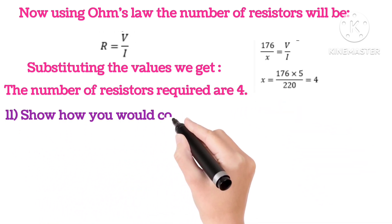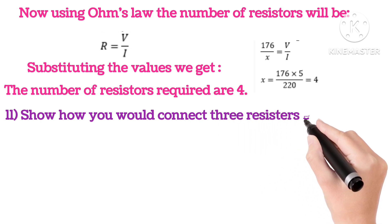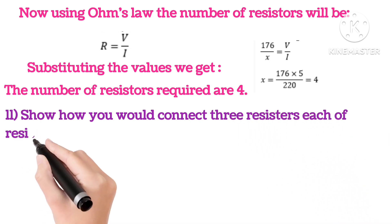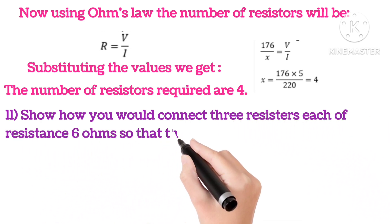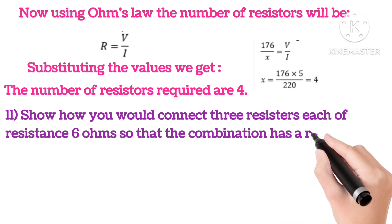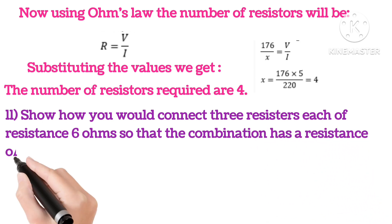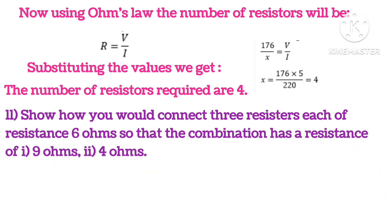Eleventh: show how you would connect 3 resistors each of resistance 6 ohms so that the combination has a resistance of first 9 ohms and second 4 ohms.